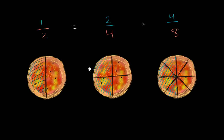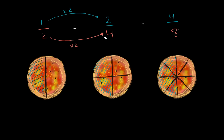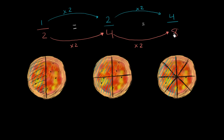You might see a little bit of a pattern here. Going from this scenario to this scenario, I got twice as many equal slices. Because I had twice as many equal slices, I needed to eat two times the number of slices. So I multiplied the denominator by two and I multiplied the numerator by two. If I multiply the numerator and the denominator by the same number, then I'm not changing what that fraction represents. Going from four slices to eight slices, I cut every slice into two more slices, so I had twice as many — and then had to eat twice as many pieces. So one half, two fourths, four eighths — and I could keep going: eight sixteenths, sixteen thirty-seconds. All of these would be equivalent fractions.